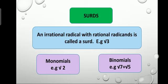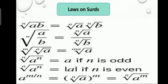There are different laws of surds that are applicable to different types of questions. These laws are applicable in different exercises. For example, one such law involves the n-th root of AB: ⁿ√(AB) = ⁿ√A × ⁿ√B. We apply these formulas and laws to questions in the exercises.